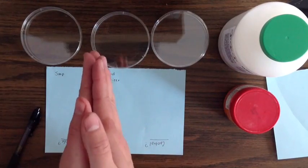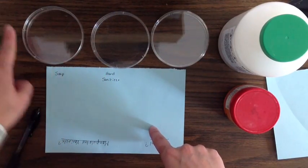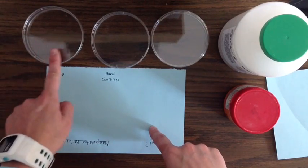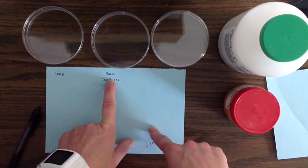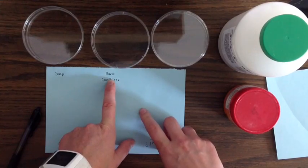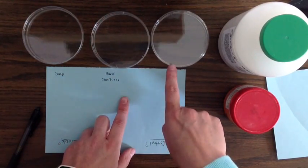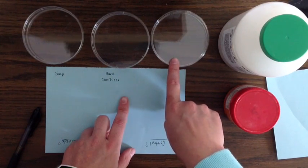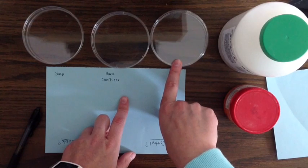So what we would do is wash our hands, and we would touch an object and swipe it in here. We would wash our hands with hand sanitizer only, touch the same exact infected object, and swipe this one. Then we go to this third one. Now this third one we're actually going to leave closed. That's a part of the control.